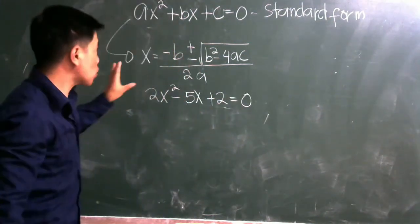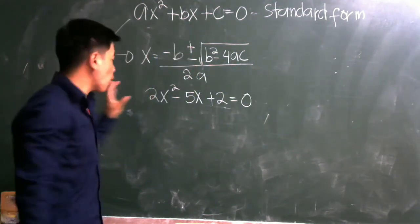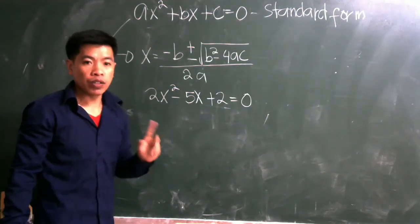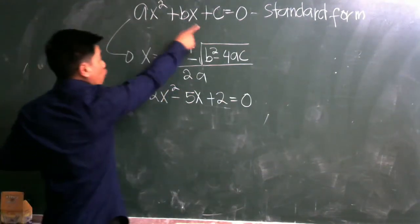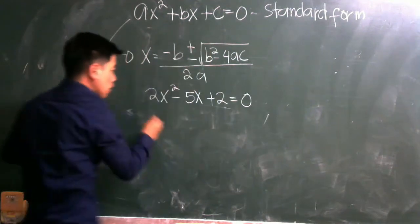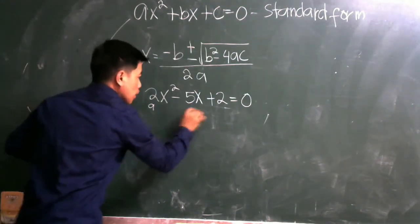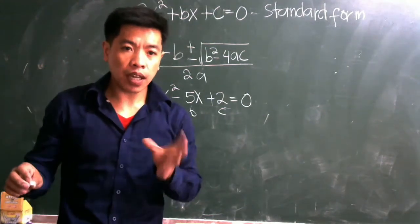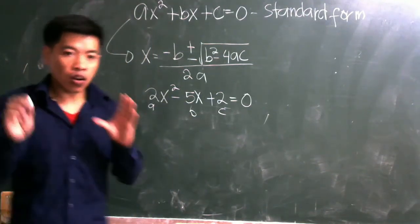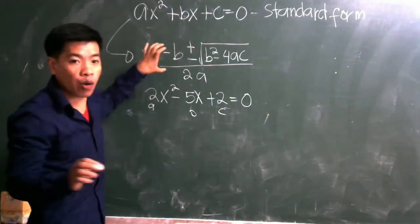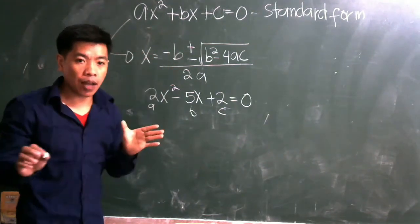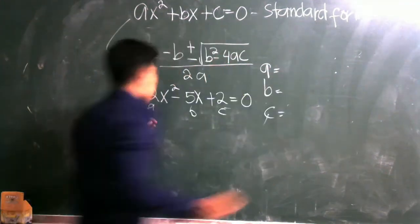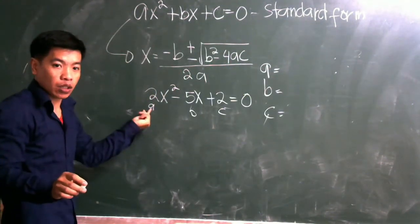Suppose we have the equation 2x² − 5x + 2 = 0. As you can see from the standard form, we identify a, b, and c. We first determine the values of a, b, and c so we know what numbers to substitute into our formula. Our a is the leading coefficient, which is positive two.